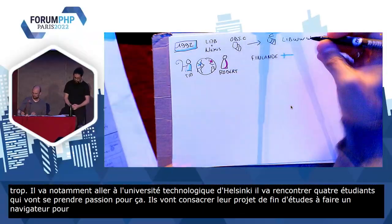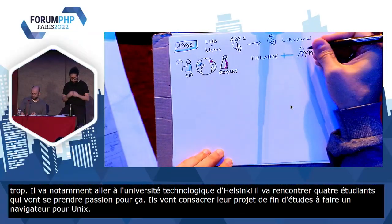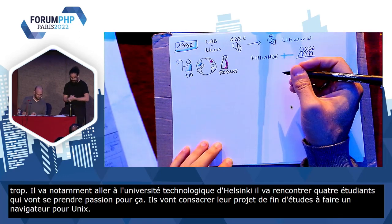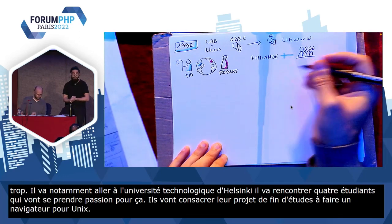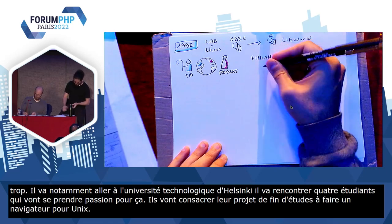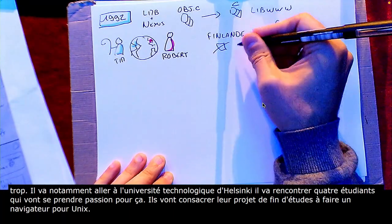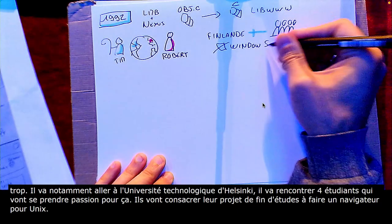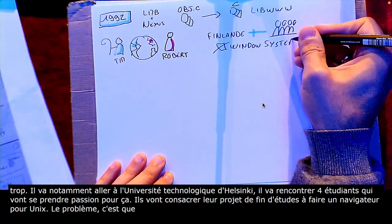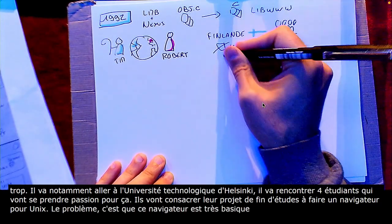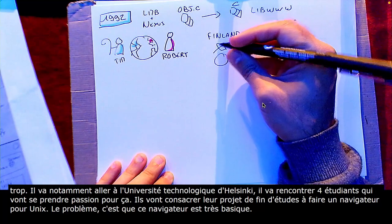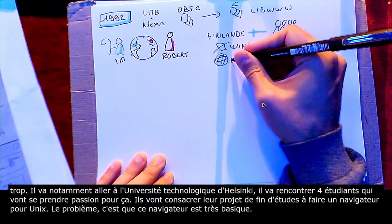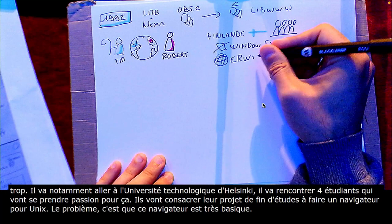En avril 1992, ils vont publier la première alpha de ce navigateur sur le FTP public du CERN et ils vont nommer ce navigateur Erwise. Le problème, c'est que ce navigateur est très, très basique. Ils étaient restés bloqués un petit peu sur la métaphore du papier : c'est un texte en sérif, un fond bleu, il fallait double-cliquer sur le lien, c'était un petit peu chelou.